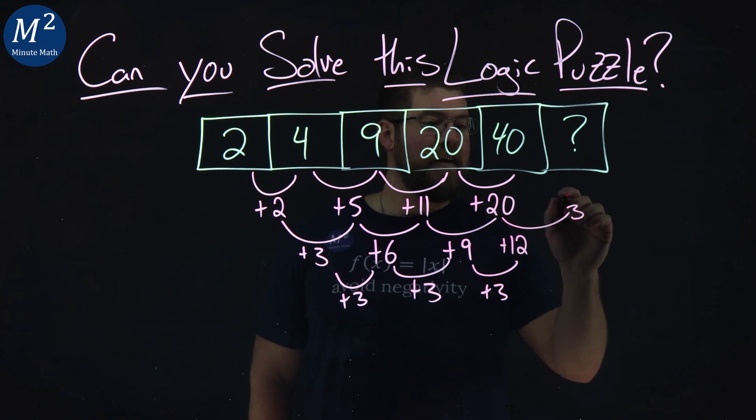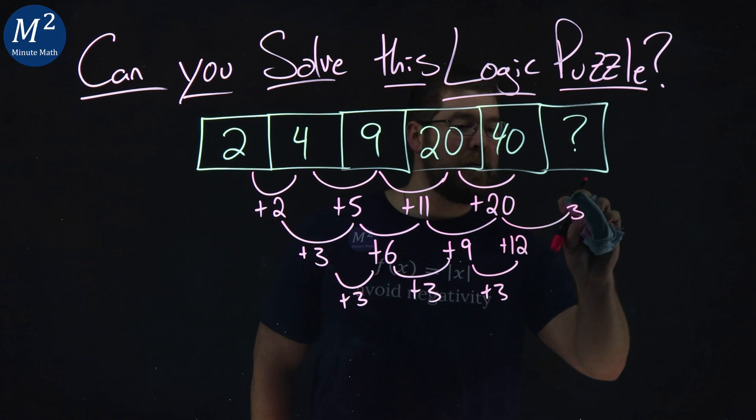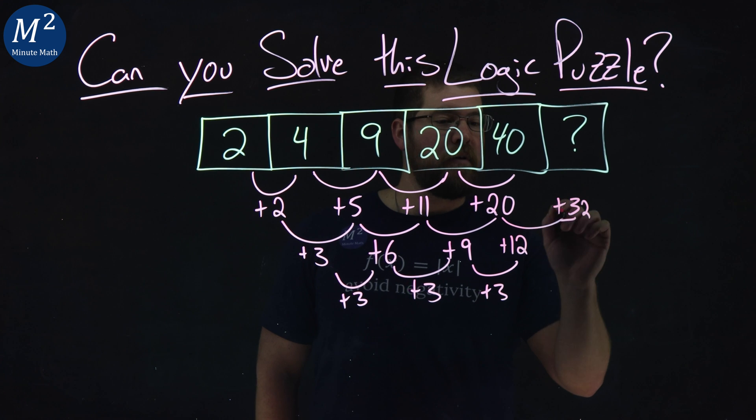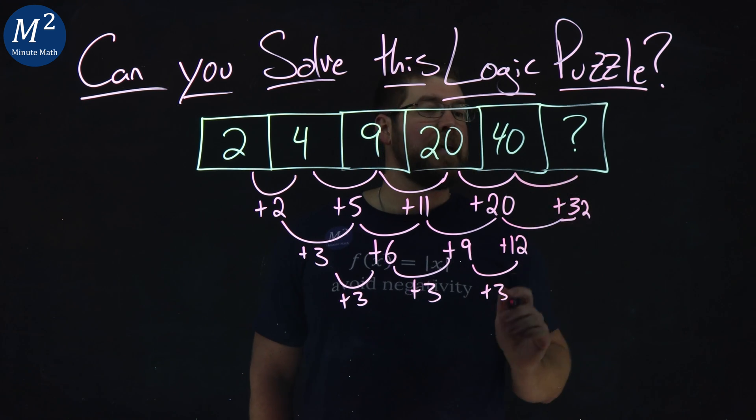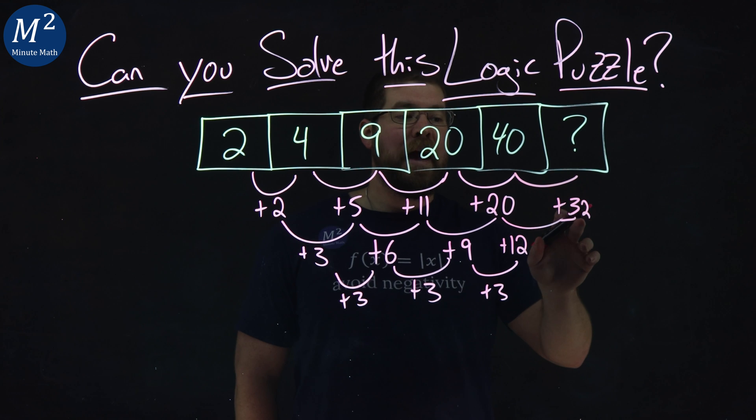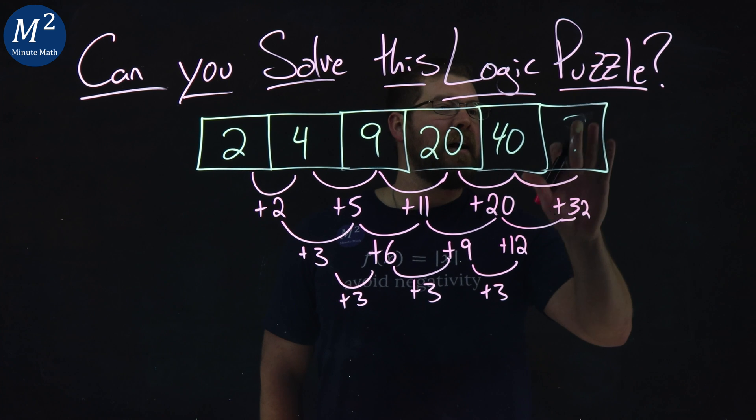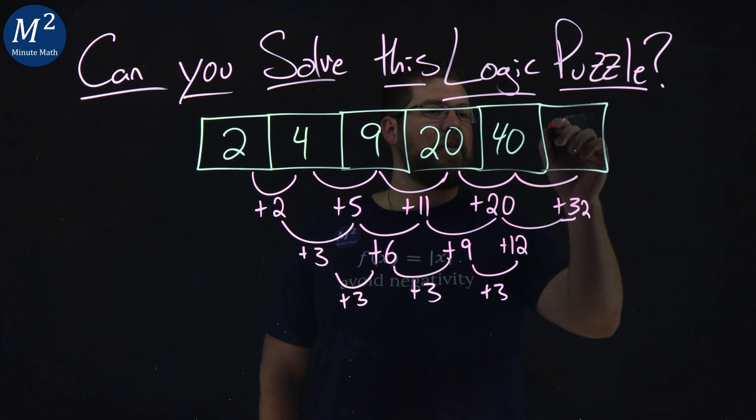Oops. Let's go erase that here. A little off here. Plus 32. And then from there, from 40 to our mystery number, we're adding 32 to that. And so 40 plus 32 is, well, let's erase that here now. We have an answer, is a good old 72.